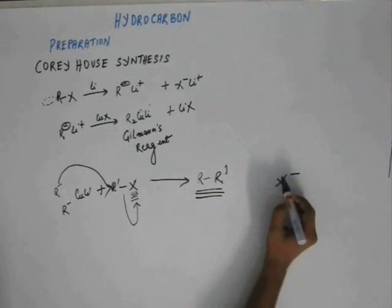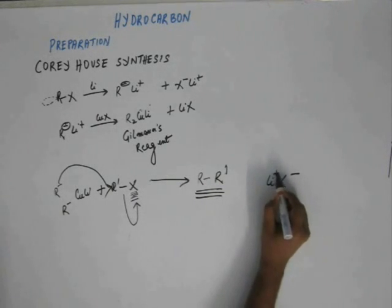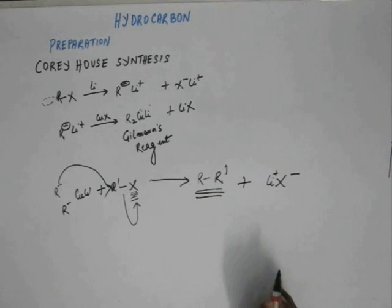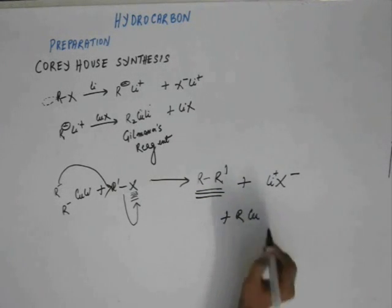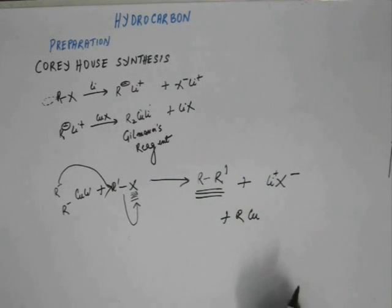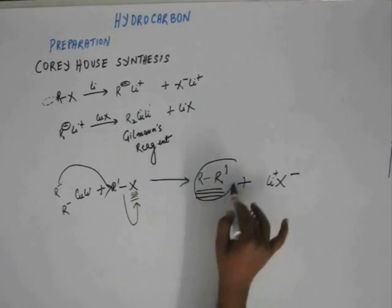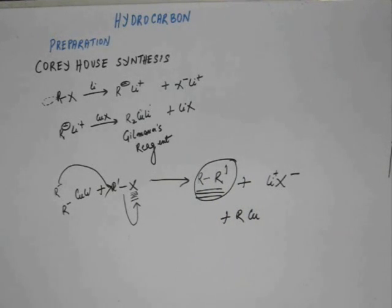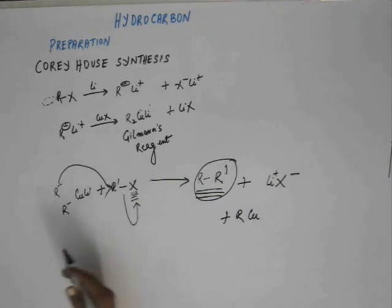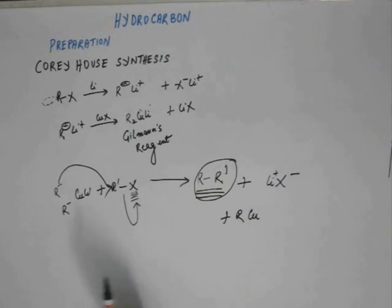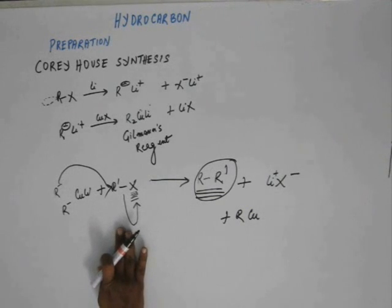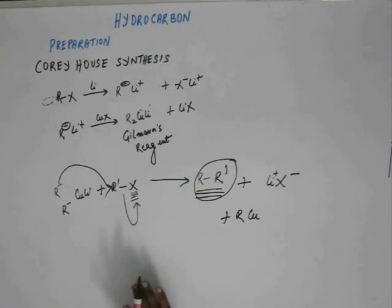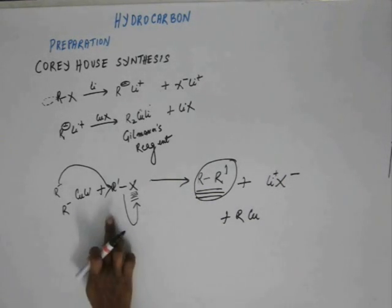To balance the equation, Li⁺ gets paired with X⁻, and the leftover RCuLi species (cuprous copper with a minus charge on R) remains. The organic product we are interested in is the alkane R–R'. Because this is a substitution reaction involving a backside attack, if there is steric hindrance the reaction will not occur with the required efficiency. For a higher yield, R'X should be a 1° alkyl halide; with 2° the yield is very low, and with 3° the reaction does not occur.